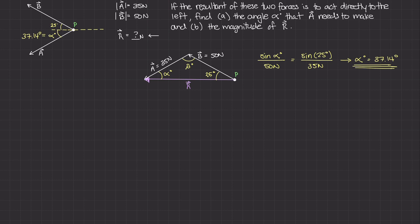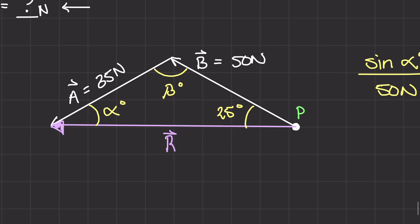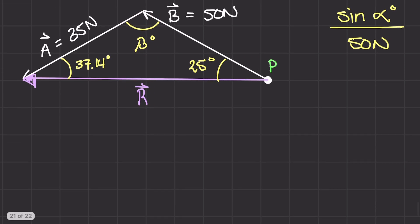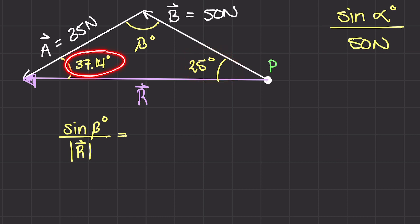Part B is asking for the resultant magnitude of R. Let's zoom into this triangle. We already figured out that alpha is 37.14 degrees. We can use the sides of this triangle to figure out what R is, using the law of sines once more. This time, I'm going to use the beta angle and side R. So: sine of beta over the magnitude of R equals sine of 25 degrees over 35 newtons. I'll use 25 because it's a nice clean number.